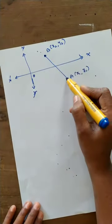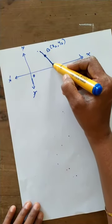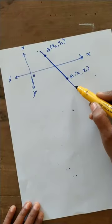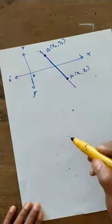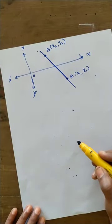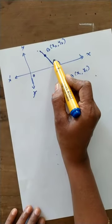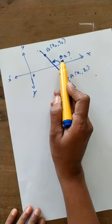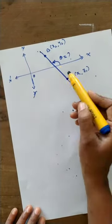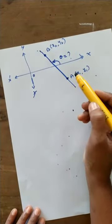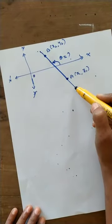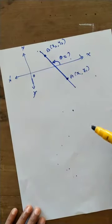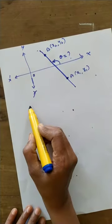Here two points are given — A and B — and a straight line passes through those two points. A is the point (x1, y1) and B is the point (x2, y2). When two points are given, the angle made by the straight line is not given, so we need a particular formula to find the slope.